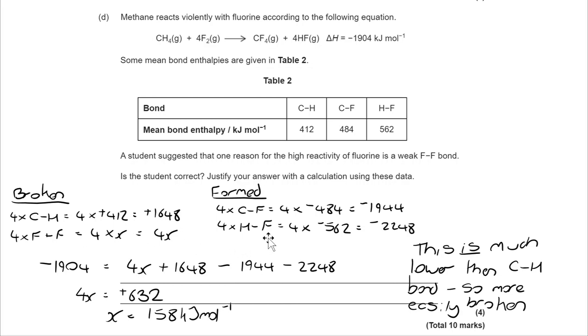When you then get to the actual justification, higher reactivity of fluorine is a weak F-F bond. The F-F bond we have calculated is 158. That's much lower than the C-H bond and therefore more easily broken. That takes us to the end of this question. Thank you for listening.